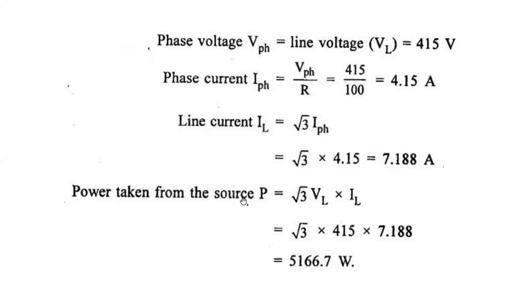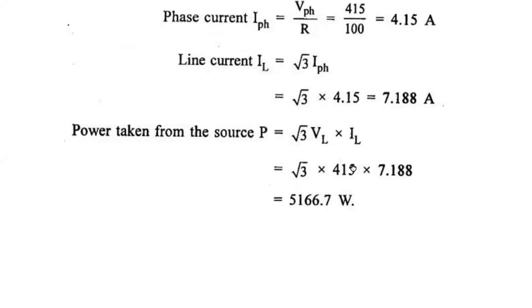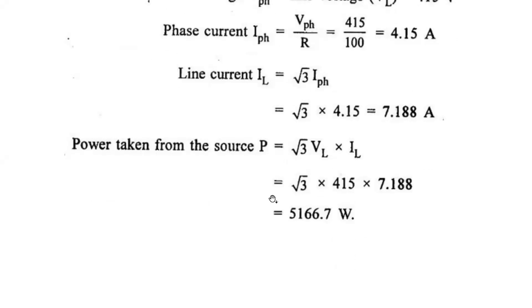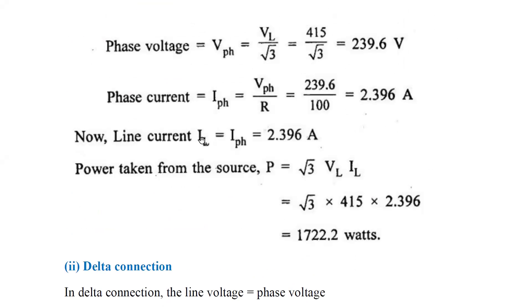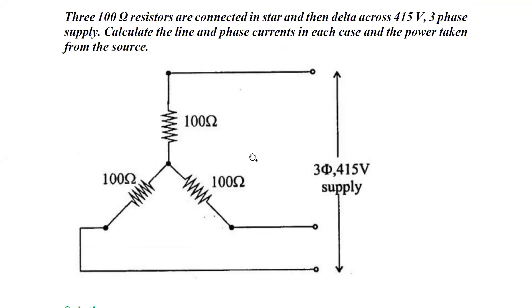Power taken from the source for delta connection: P equals root 3 times VL times IL. Root 3 times 415 times 7.18 amperes gives a power of 5166.7 watts. This is the power taken from the source for the delta connected circuit. We have calculated IL and power for both star and delta connections for this problem.